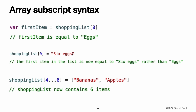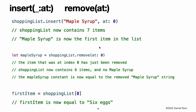You can use subscript syntax to change an existing value at a given index. When you use subscript syntax, the index you specify needs to be valid. You can also use subscript syntax to change a range of values at once, even if the replacement set of values has a different length than the range you are replacing. This example replaces chocolate spread, cheese, and butter with bananas and apples. To insert an item into the array at a specified index, call the array's insert(_:at:) method. This inserts a new item with the value of maple syrup at the very beginning of the shopping list, indicated by an index of zero.